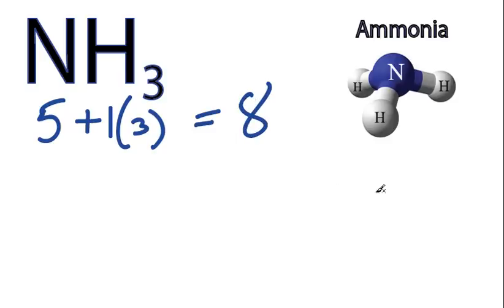Hydrogen always goes on the outside, so let's put our nitrogen right here, and let's put some hydrogens around it. We have 3 of them. There they go, 1, 2, 3.